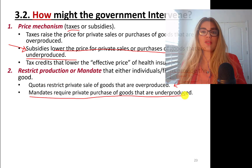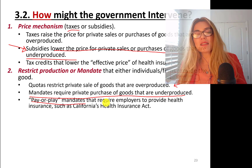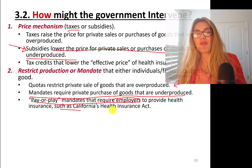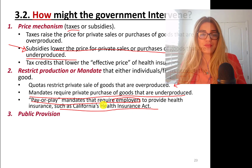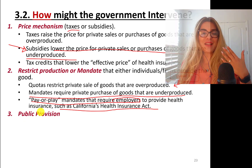Mandates require private purchase of goods that are underproduced. For example, the government mandated health insurance, though this was later removed. Pay-or-play mandates require employers to provide health insurance, such as California's Health Insurance Act — an older act.